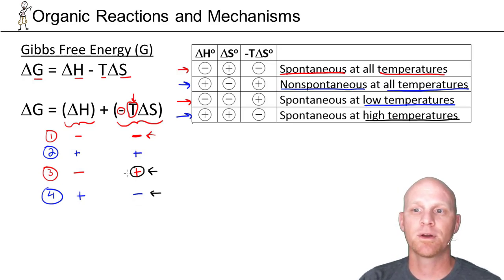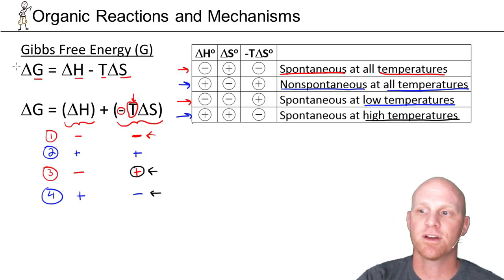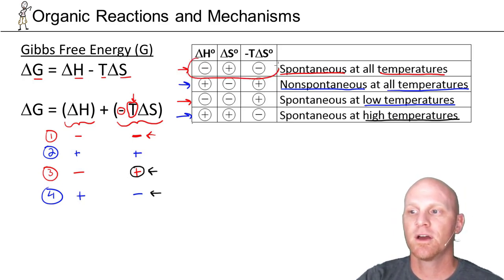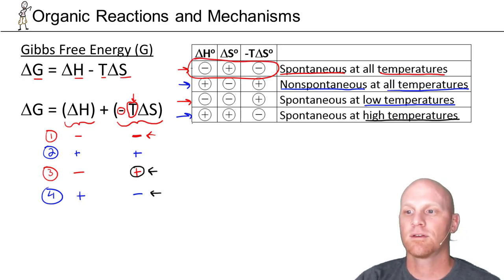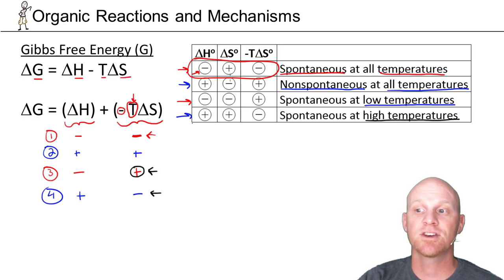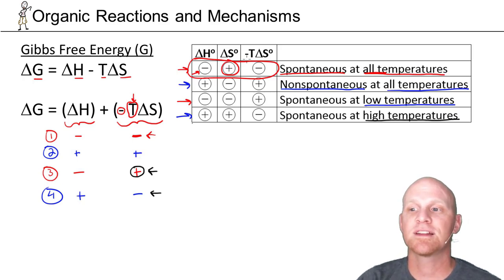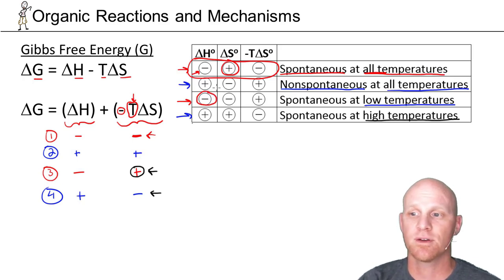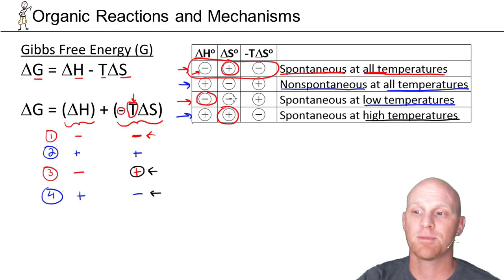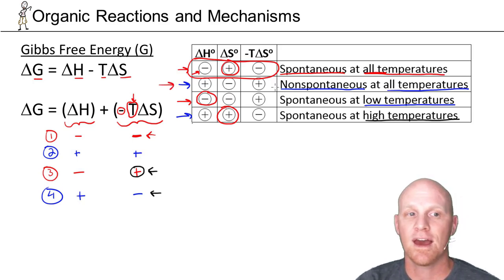This should be a review from general chemistry. The big picture: the universe wants chemical species to be lower in energy — a negative delta H — and it wants increased randomness and disorder — a positive delta S. If you give the universe both, a reaction will be spontaneous at all temperatures. But you've got to give it at least one: either an exothermic reaction or an increase in disorder. Give it one of the two, and it'll be spontaneous at least some of the time. Give it neither, and the reaction will be non-spontaneous at any temperature.